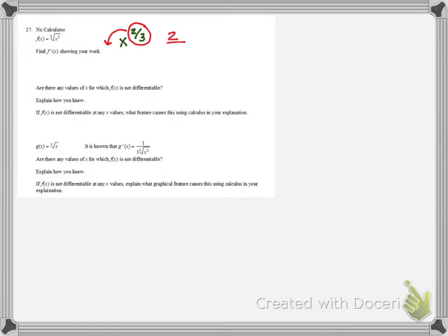So we would have 2 over 3, x to the 2 thirds minus 1 in the form of 3 thirds. Well that would give us 2 over 3, x to the 1 third, negative.